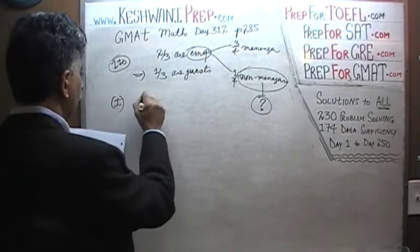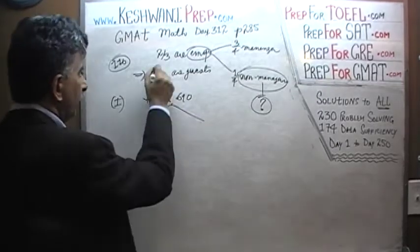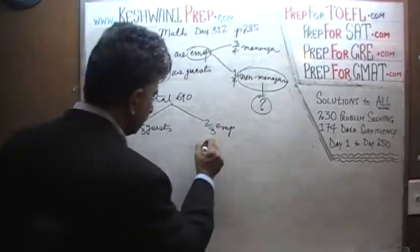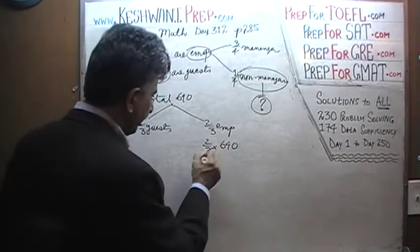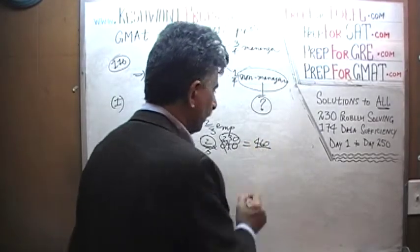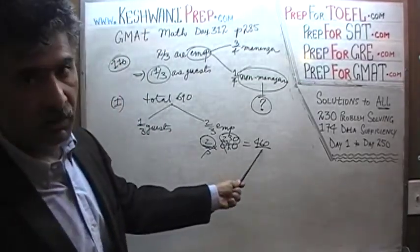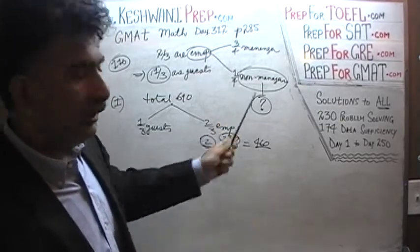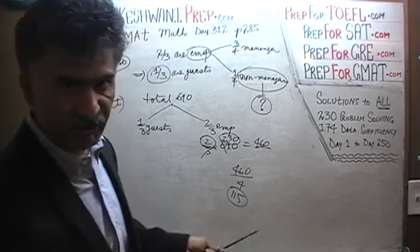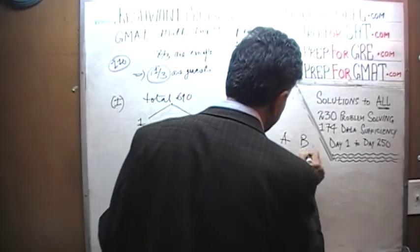In statement one, they tell us there are a total of 690 people on the cruise. We know that one-third of them are guests, and therefore two-thirds are employees. Two-thirds of 690: divide by 3 we get 230, times 2 is 460. So 460 employees are going on the cruise. We then take one-quarter of that amount for the non-managers: 460 divided by 4 is 115. The first statement by itself is sufficient.